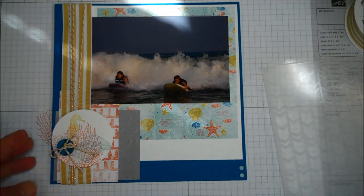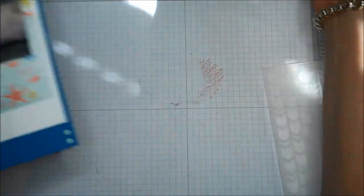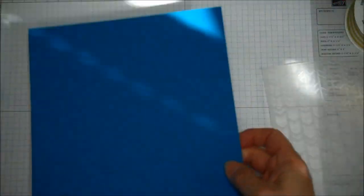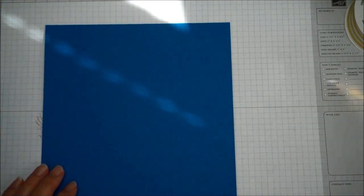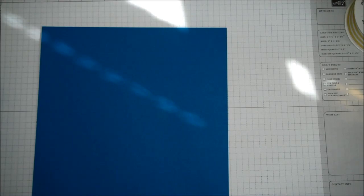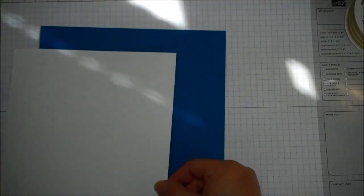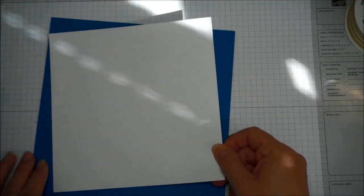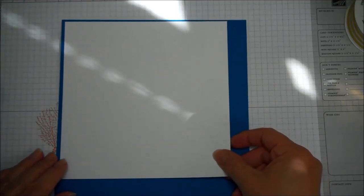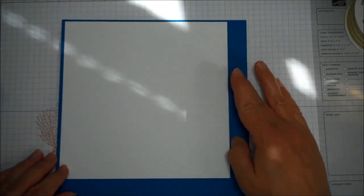Alright, so let me show you how I got started with this page. I started out with a piece of Pacific Point. I cut it at 8x8, then I took a piece of Whisper White, and I cut this 7x7. So I'm going to put this up in the corner like this.